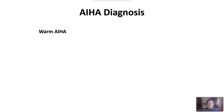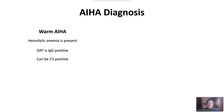A diagnosis of autoimmune hemolytic anemia is considered when anemia is found in the setting of hemolysis, as demonstrated by elevated LDH, undetectable haptoglobin, and hyperbilirubinemia. In warm autoimmune hemolytic anemia, the direct antiglobulin test (DAT) is typically positive for IgG. The DAT can also be C3D-positive. The peripheral blood film demonstrates spherocytes.